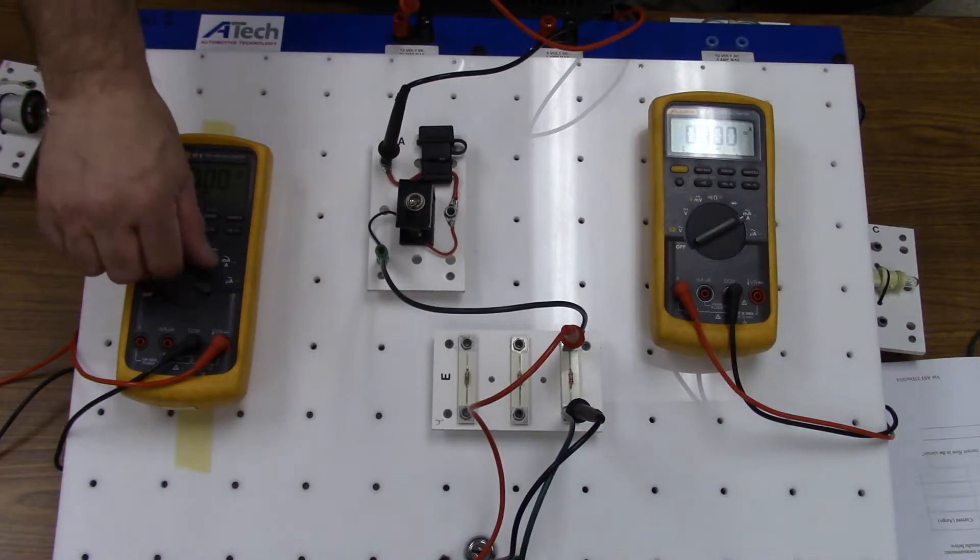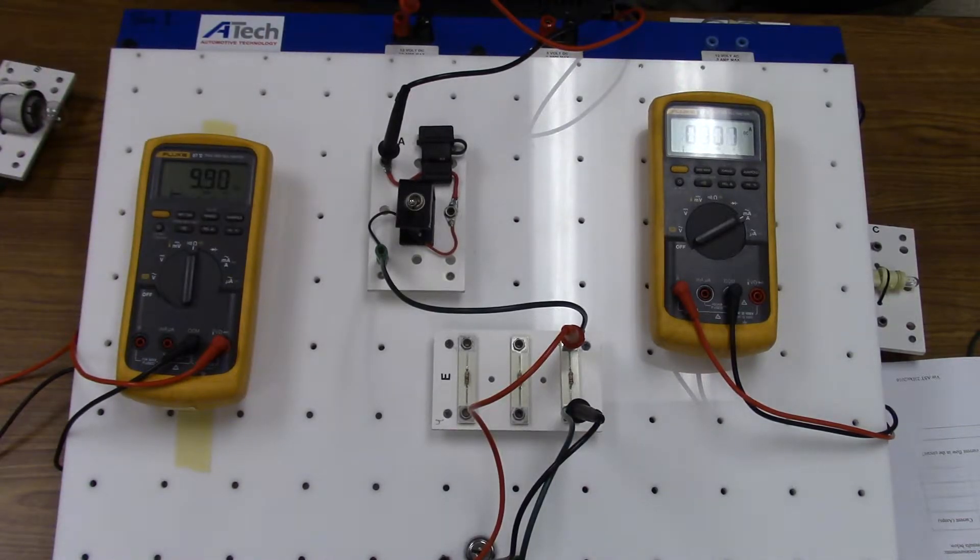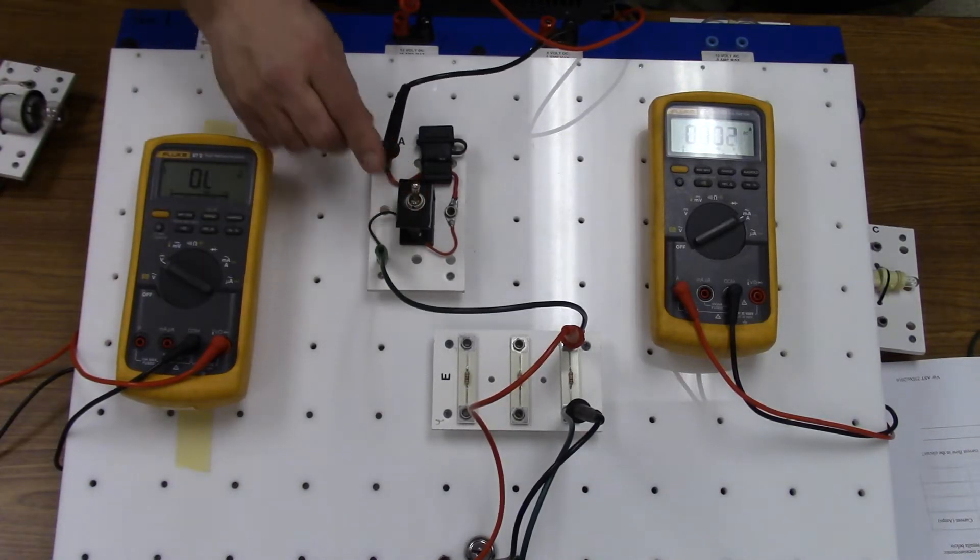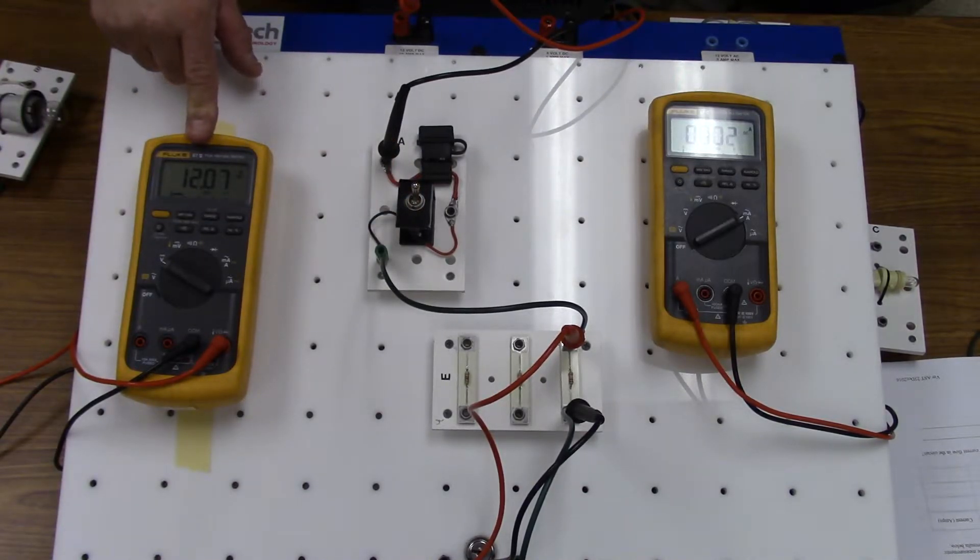We'll move to R3, we'll measure the resistance, 9.9k, so 9900 ohms. Measure the voltage, 12.07 volts, 12 volts.